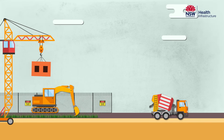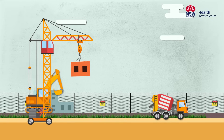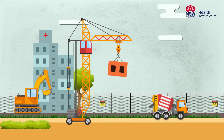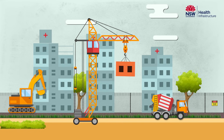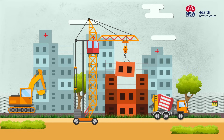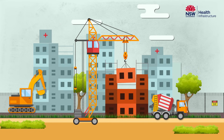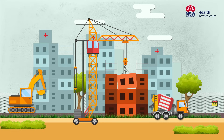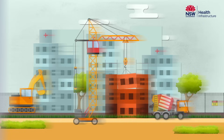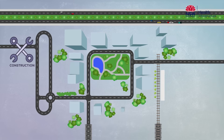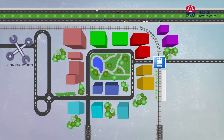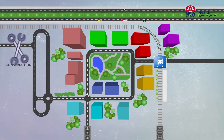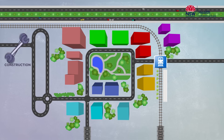Construction involves enabling work such as installing site fences and site offices, early works such as demolition and installation of in-ground services, main works which includes building the structure and installing major furniture, fixtures and equipment, and refurbishments of facilities such as repurposing existing facilities for an alternative use. Construction is often divided into different stages so our works have minimal disruption to patients and staff, with priority always given to providing clinical services over construction.